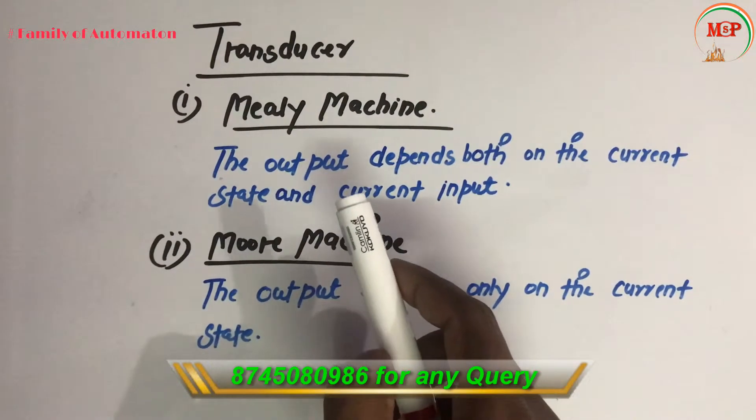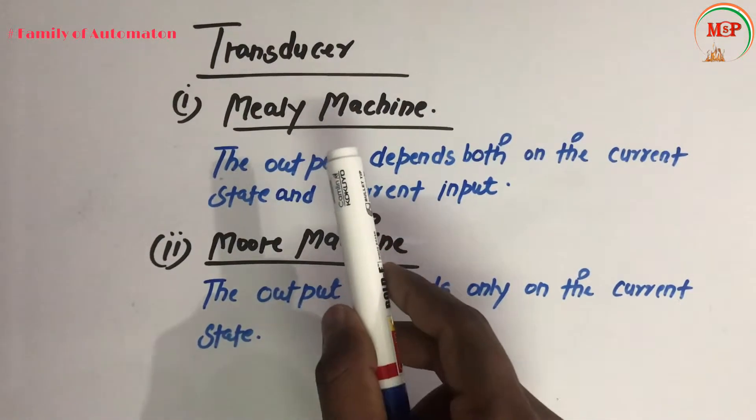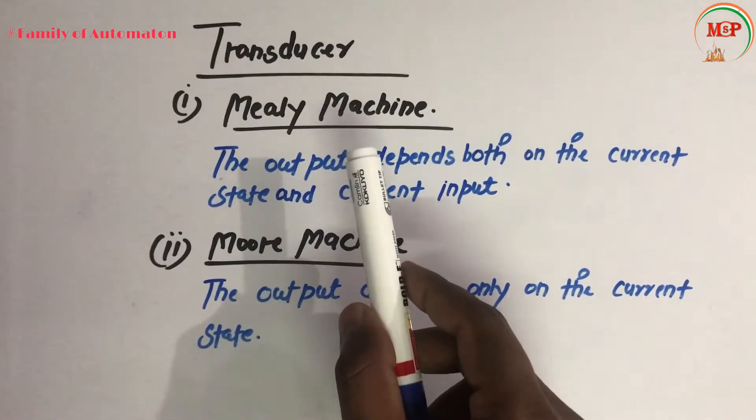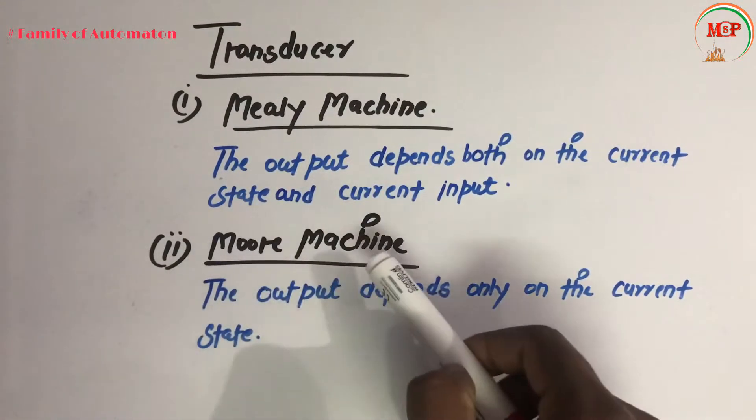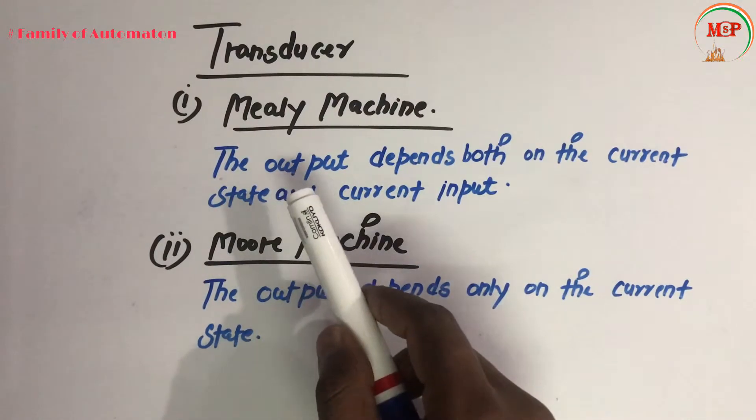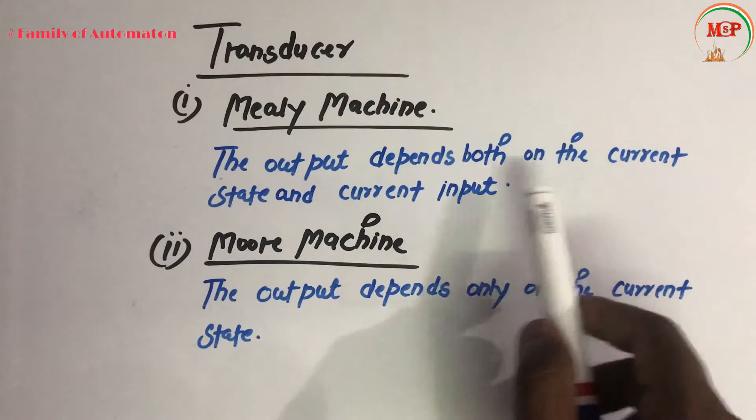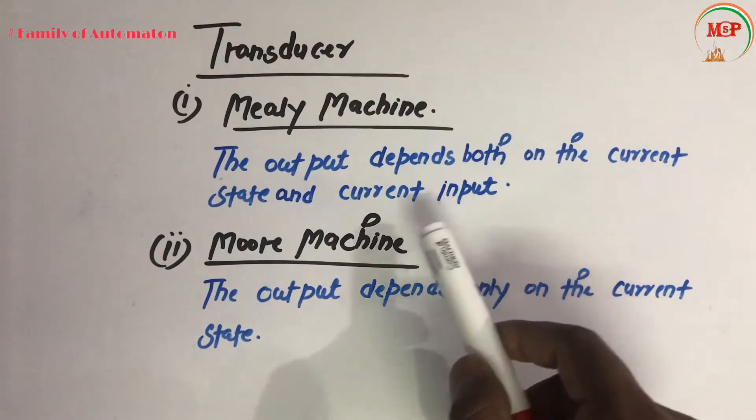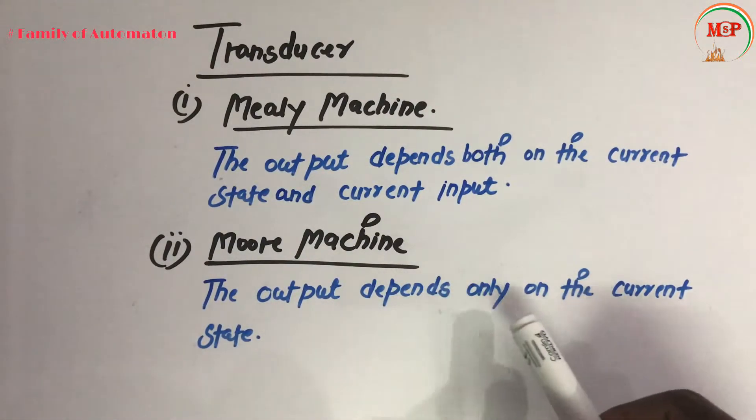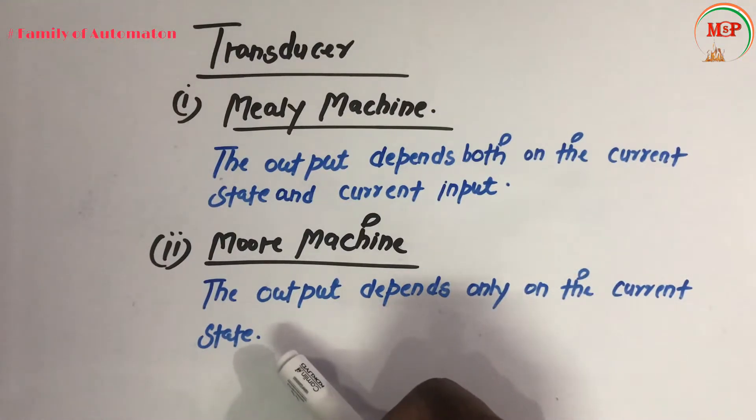Now let's see the definition of transducer in detail. There are two types: Mealy machine and Moore machine. In Mealy machine, the output depends on both the current state and the current input. In Moore machine, the output depends only on the current state.